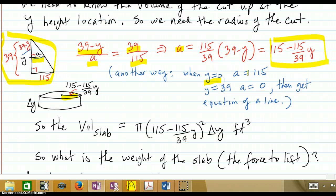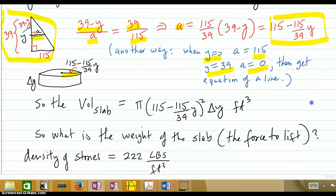So when Y is 0, in other words, when you're on the ground, what is the A? It's all the way to 115, the full radius on the bottom. When Y gets to the top at 39 feet, what's the A across there? Nothing. 0 because you're at the tip. And then you get a linear equation to fit those two points. And you get the same thing.